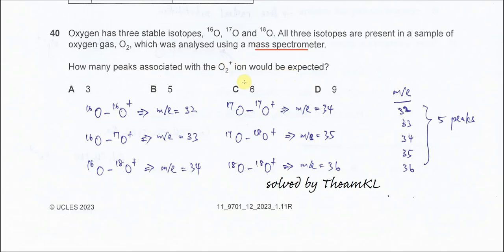For the mass spectrum it's going to show the M/E value. So we need to know the mass that produced from this O2+. There are a few combinations.